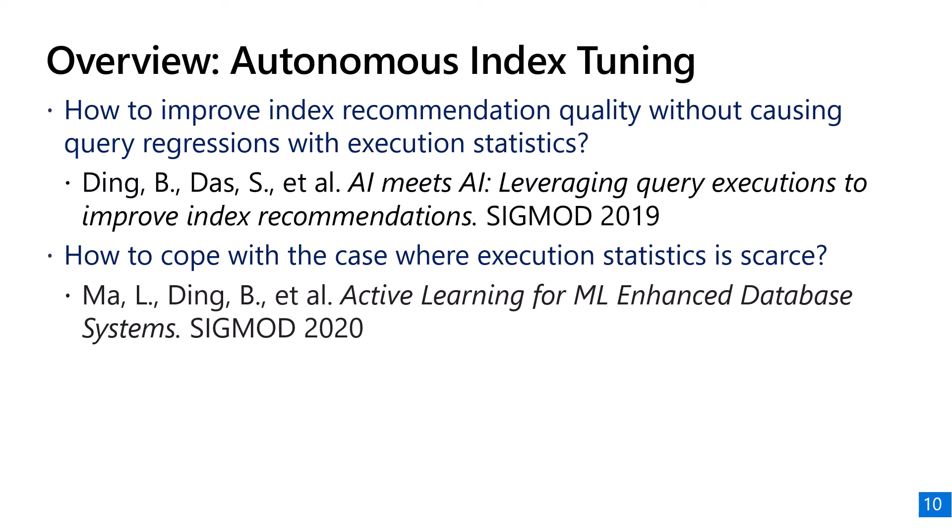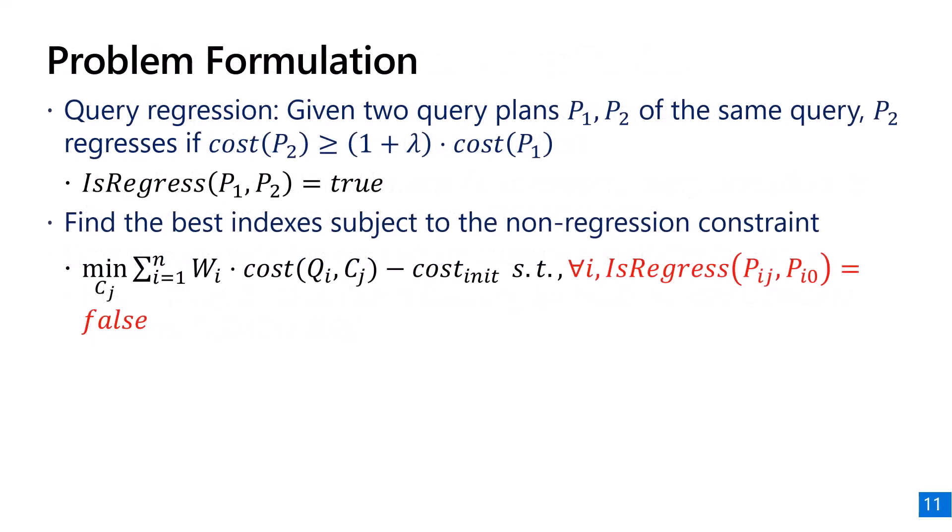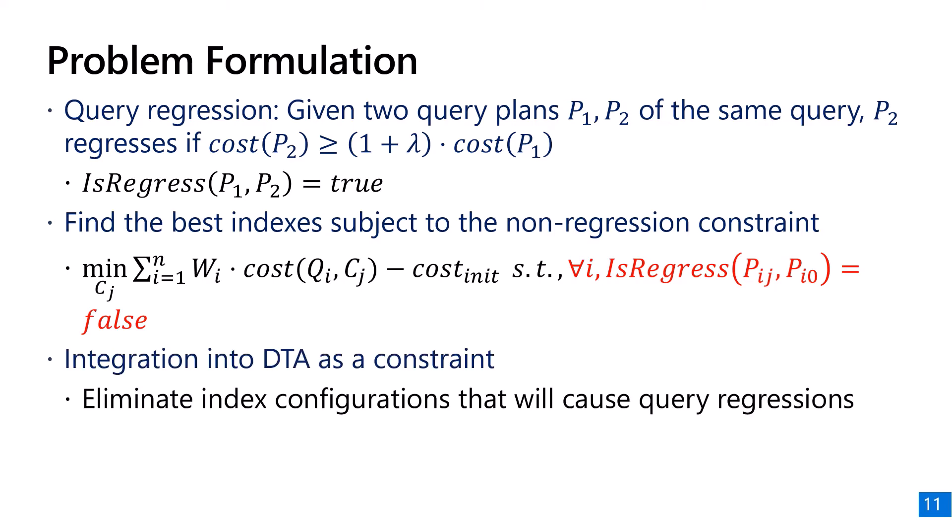Let's start with a formal problem definition. Given two query plans P1 and P2 of the same query, P2 regresses if the cost of P2 is higher than the cost of P1 with some threshold lambda. This lambda can be considered as a tolerance for insignificant query regressions and can be set to, say, 20%. To avoid query regressions, we would like to recommend the best set of indices subject to the constraint that no query will regress with a new index configuration. This constraint can be integrated into the original DTA, where index configurations that cause query regressions are eliminated during the search.